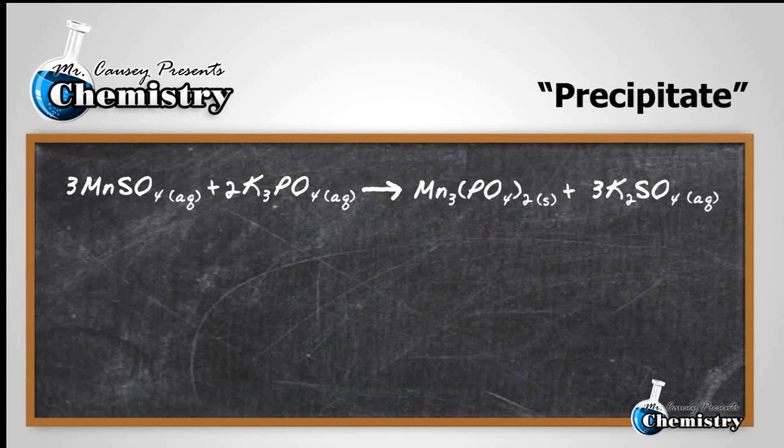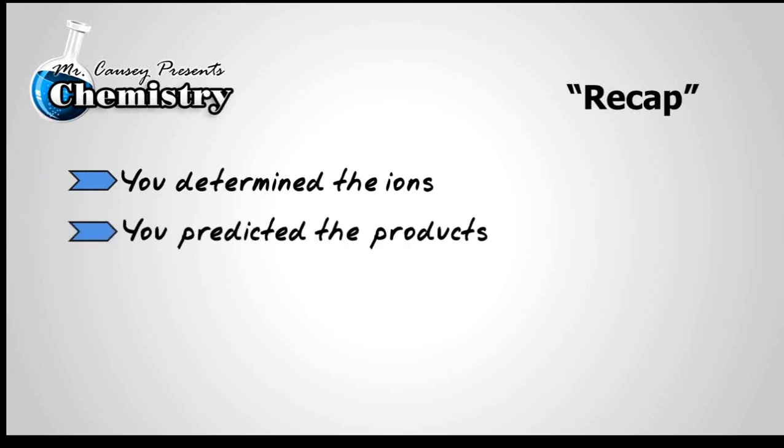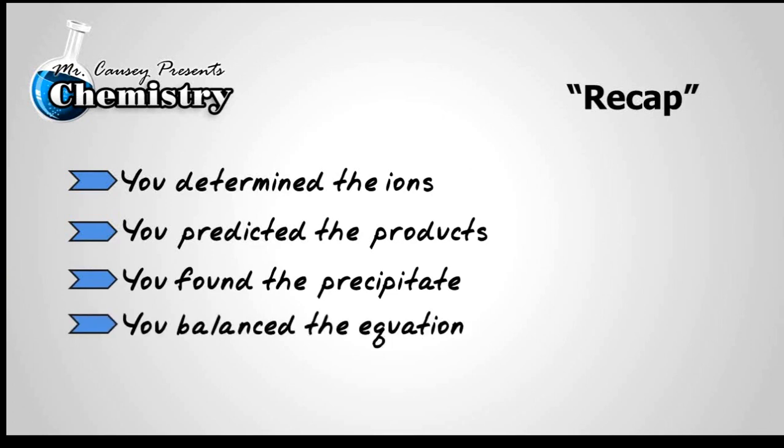And we have now gone through and we have found the precipitates, we've balanced it, and we've made a prediction on the products. So recap: you determined the ions, you predicted the products, you found the precipitate, and you balanced the equation. Good job.